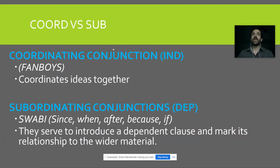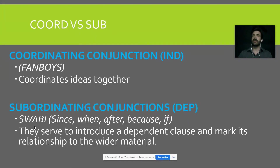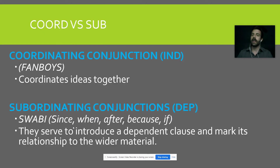A good reminder: coordinating conjunctions are FANBOYS — that's what we use to connect independent clauses together with a comma. And subordinating conjunctions are what we use to signify dependent clauses. You can use the acronym SWABBIES, which stands for since, when, after, because, if — those are some of the general subordinating conjunctions. They serve to introduce dependent clauses, and when they come before our independent clauses and act as an introduction, that's when they're going to get a comma.